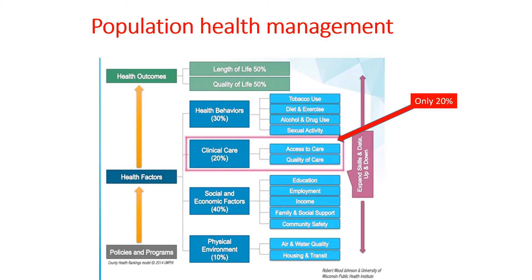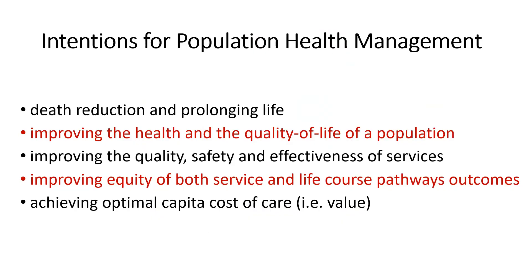The NHS Long-Term Plan encourages clinicians to consider these determinants of health when making individual plans with patients to manage their conditions in the new integrated health systems. The intention is to start being able to tackle relevant health determinants as well as provide clinical care. The intentions for population health management include reducing death and improving the quality and duration of life, improving the quality, safety and effectiveness of services, and therefore reducing inequalities relating to both service and life course pathways, and improving the per capita cost of care — which means increasing value.